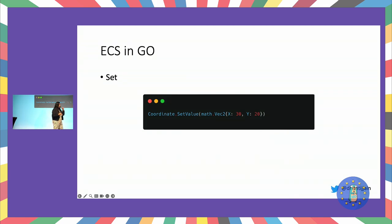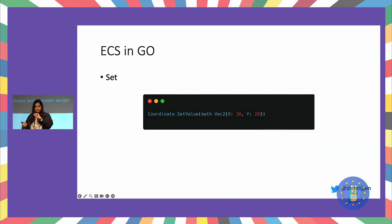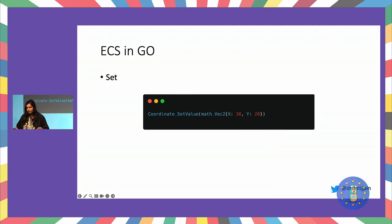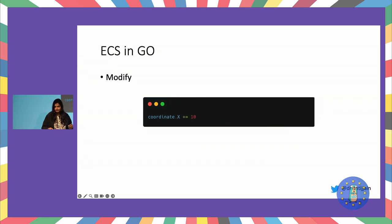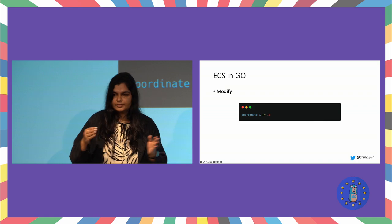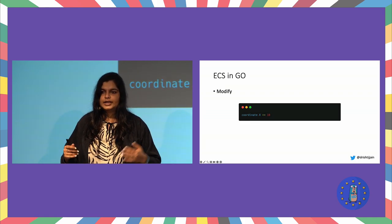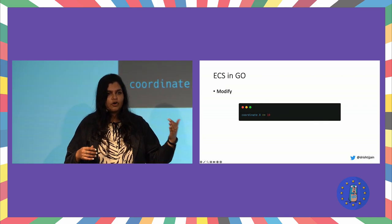Whenever you have a component — say a point in your game with X and Y coordinates — there are intuitive operations: you can set a value to move it, or modify the value using game logic rather than hard-coding it. To set a value, use 'set value.' To retrieve data across levels, use 'get' — so data stored in one level can be fetched and passed to the next. And 'modify' lets you increment or change specific axes, for example incrementing only the X coordinate while Y stays fixed.